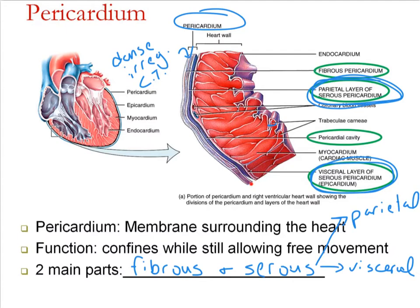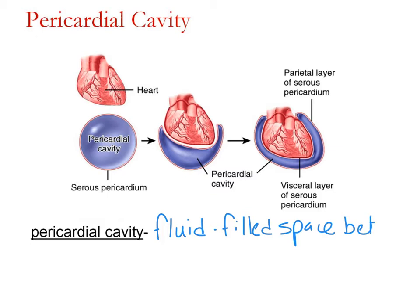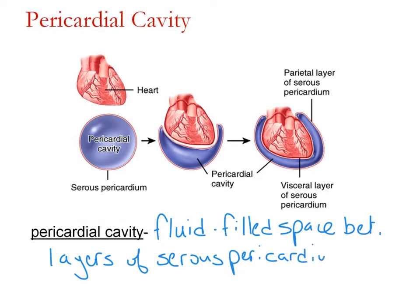Between the parietal and visceral layers of the serous pericardium, you have the pericardial cavity — a fluid-filled space between the layers of the serous pericardium. This space is filled with serous fluid.